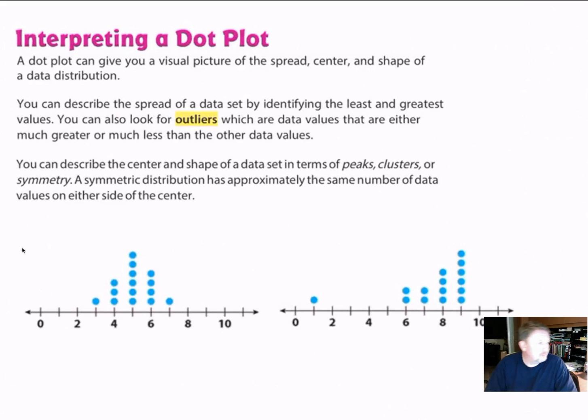So now let's talk about interpreting your dot plot. What does a dot plot actually mean? So I have these two dot plots here. A dot plot can give you a visual picture of spread, center, and shape of a data distribution. You can describe the spread of data by identifying the least and greatest values. So that's the spread. That's also your range. And you can look for outliers, which are data values that are either much greater or much less than the other data values. And these outliers can have an effect on these data values.